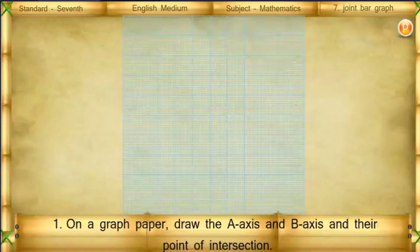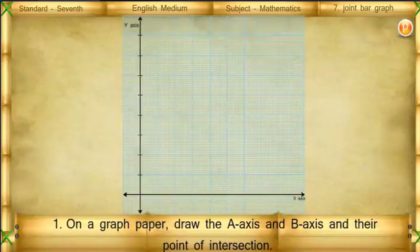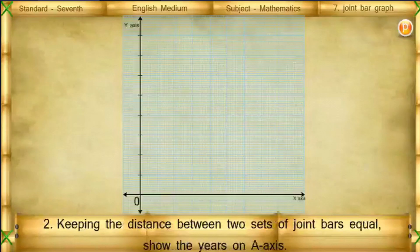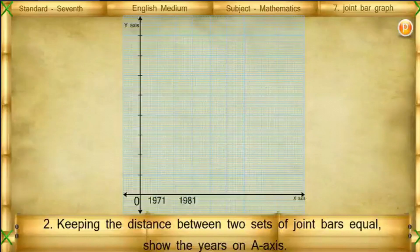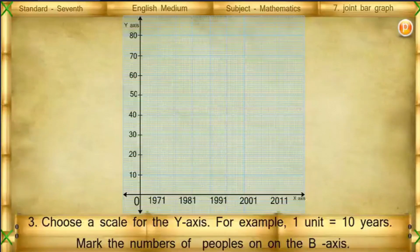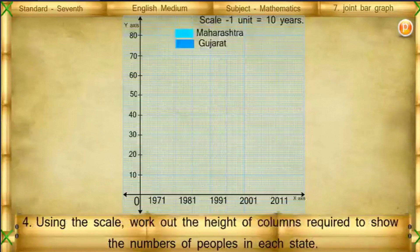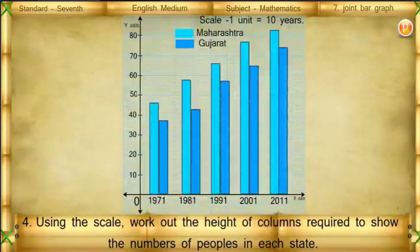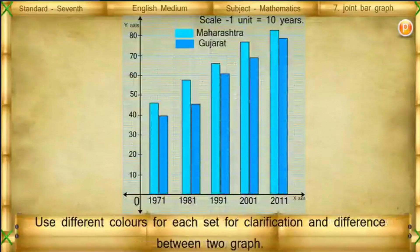Steps for drawing this joint bar graph: 1. On graph paper, draw the x-axis and y-axis and their point of intersection. 2. Keeping the distance between two sets of joint bars equal, show the years on the x-axis. 3. Choose a scale for the y-axis — for example, one unit equals 10 — and mark the number of people on the y-axis. 4. Using the scale, work out the height of columns required to show the numbers of people in each state. Use different colors for each set for clarification.